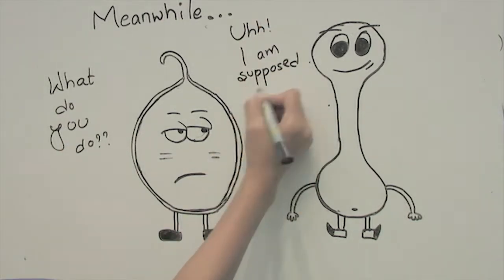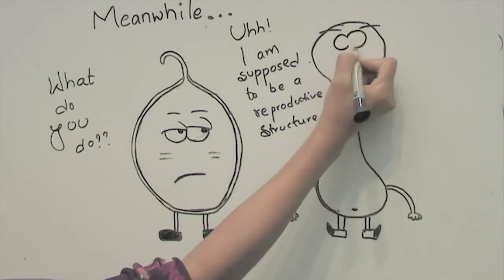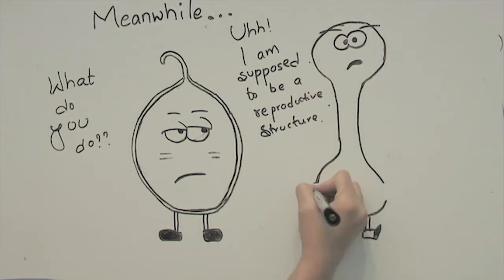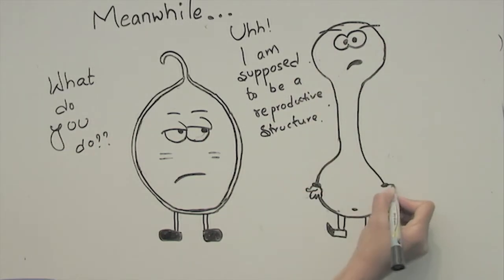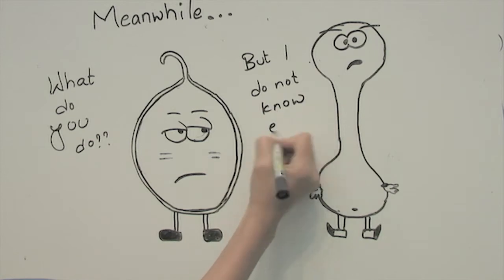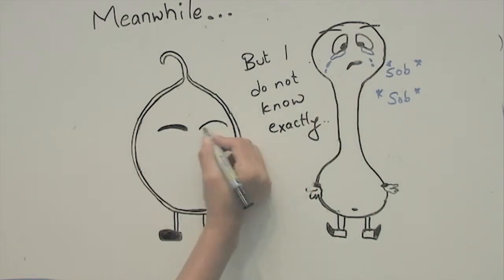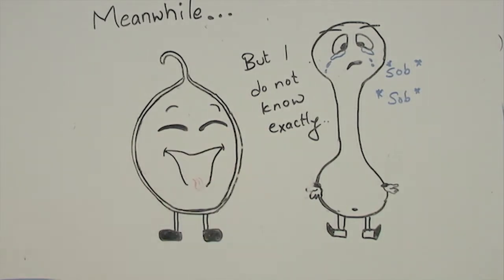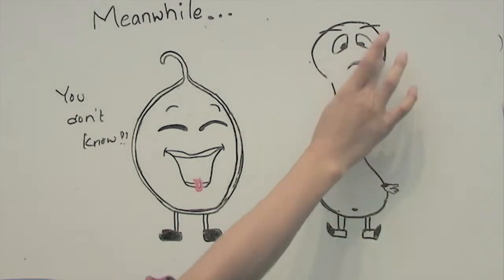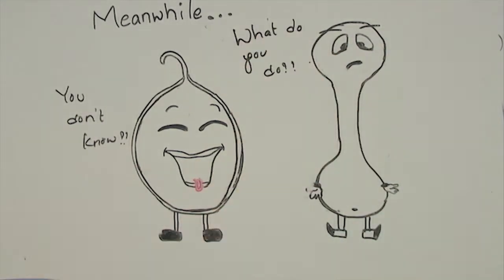So, I'm supposed to be a reproductive structure, but I don't know exactly what I do. And it starts crying. And the conidia is all mean to him, and it's laughing off. He he he, you don't know what you do? And the spermatia says, what do you do?